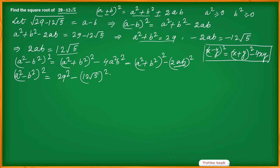29 squared is 841. For the second term: 4 times (12 root 5) squared — 12 times 12 is 144, and root 5 squared is 5, giving 144 times 5 equals 720. So 841 minus 720 equals 121. Therefore (a squared minus b squared) squared equals 121, and a squared minus b squared equals 11.